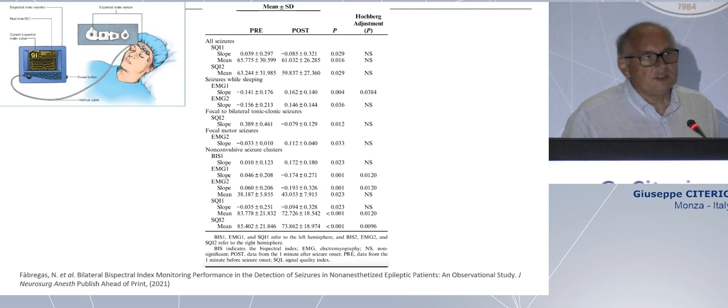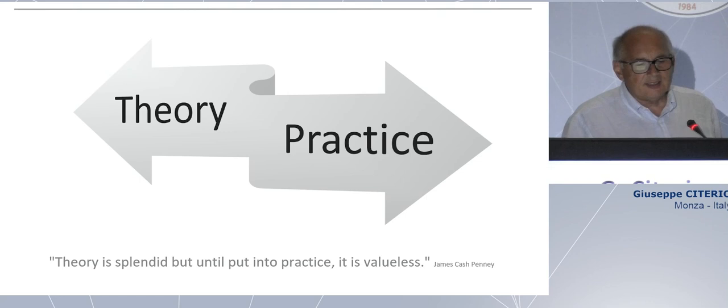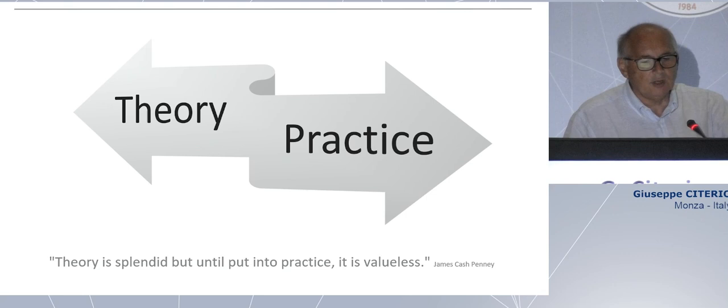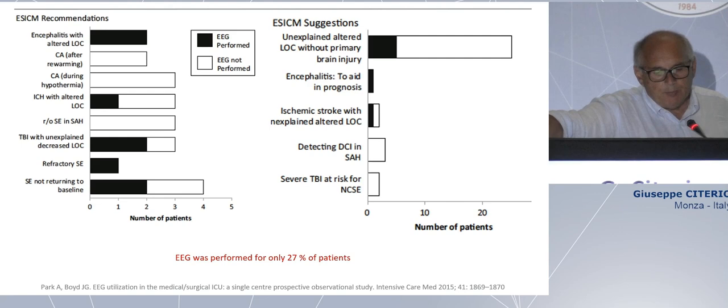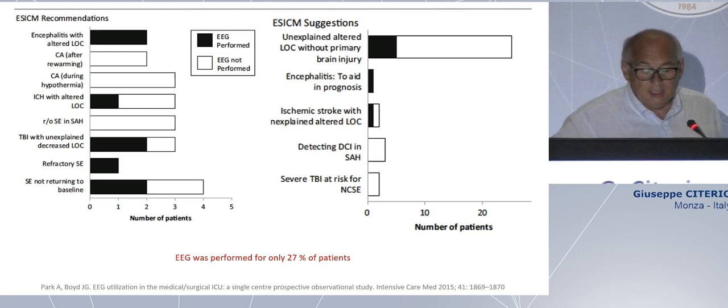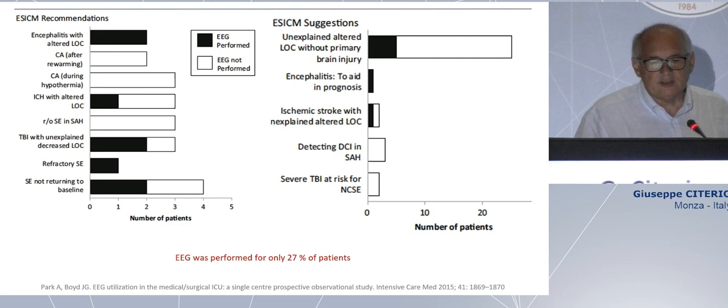I think that we have difficulties in understanding the machine. It's not so easy like the ECHO — Chiara presented you the ECHO. With ECHO it's very easy. You measure, you take a look, you look at the flow. It's a direct visualization of the structure. And it has been published in intensive care that in a short survey done in 2015, the situation is a little bit better today, but not completely solved. We have some rules, but we don't use continuous EEG in the intensive care unit.